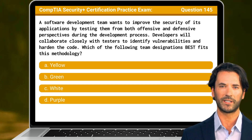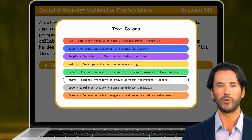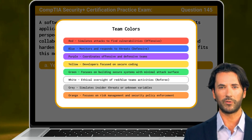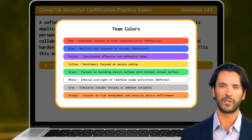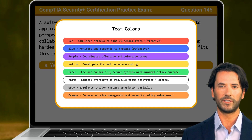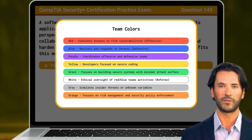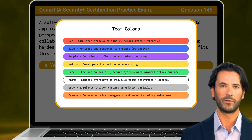The answer is A: Yellow Team. The yellow team refers to developers who focus on integrating secure coding practices while working collaboratively with both red and blue teams. This approach uses a mix of offensive and defensive testing methods to build secure applications from the ground up. The yellow team's goal is to integrate security into the software development lifecycle through continuous testing and developer-focused improvements.